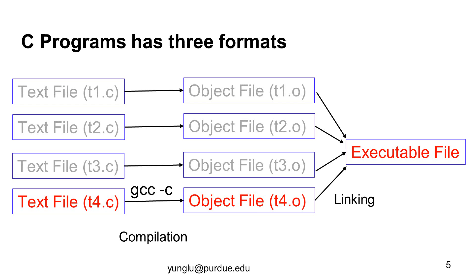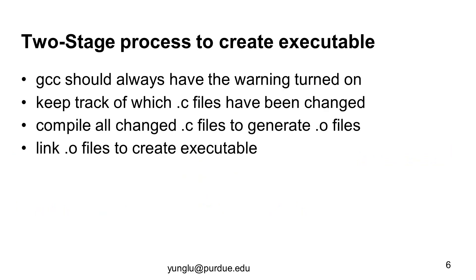A complex program may have hundreds of text files and hundreds of corresponding object files. If only one change is needed, this two-stage process saves precious time — from several seconds to many minutes.